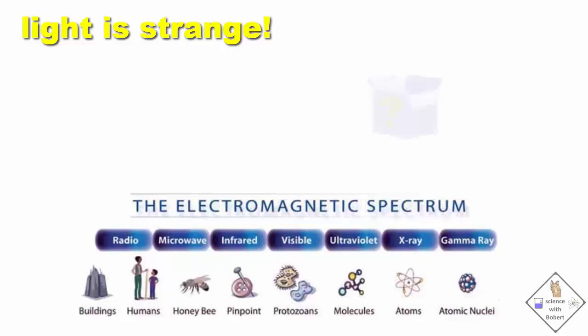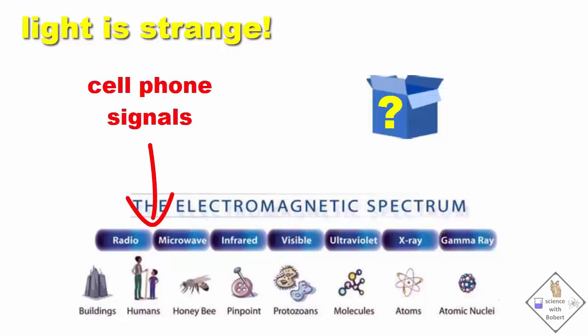If we are going to build a cell phone signal blocker, we need to know where cell phone signals fall on the electromagnetic spectrum. Cell phone signals are in the region between radio and microwaves. This region here, so their wavelength is between several feet down to the size of roughly a honeybee.